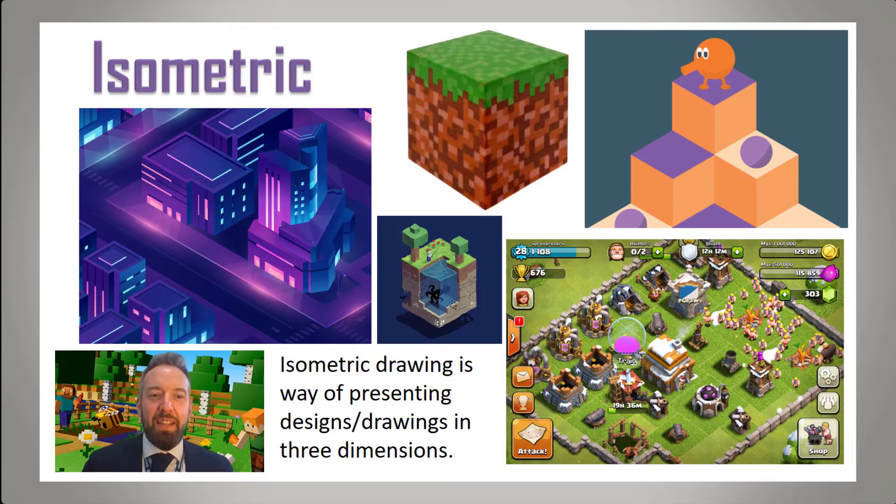You'll also see it in games like Warhammer and other strategy games like Clash of Clans where in order to give a good view of everything that's going on they use this isometric projection. So let's have a look at what isometric means.